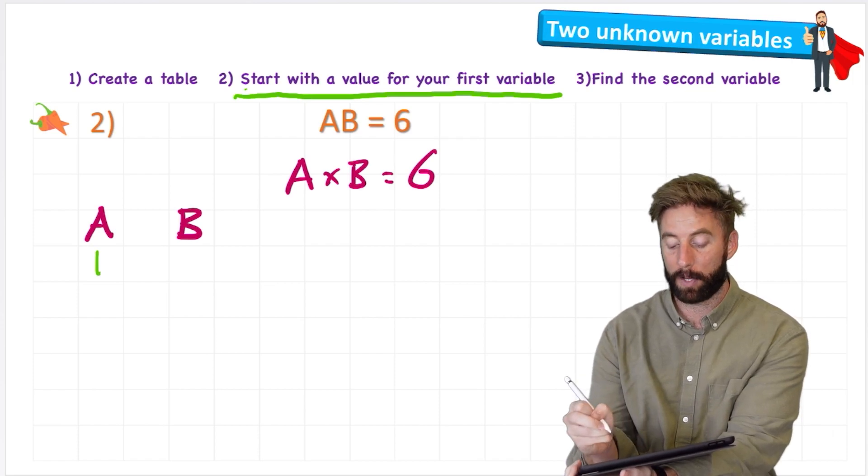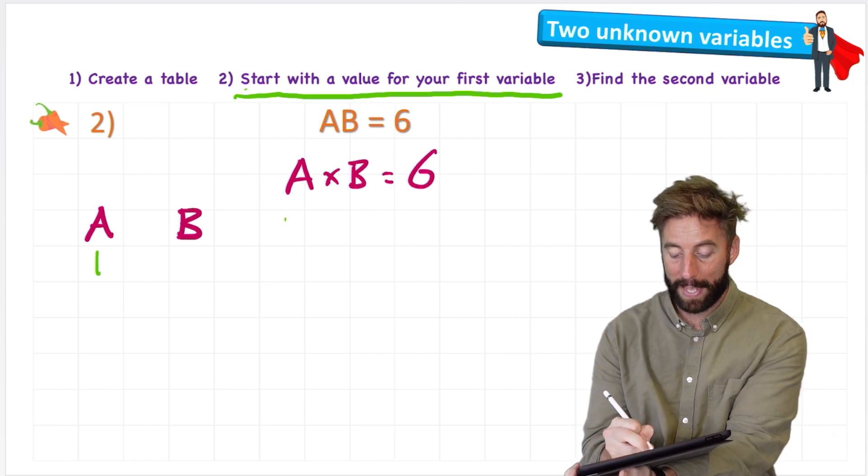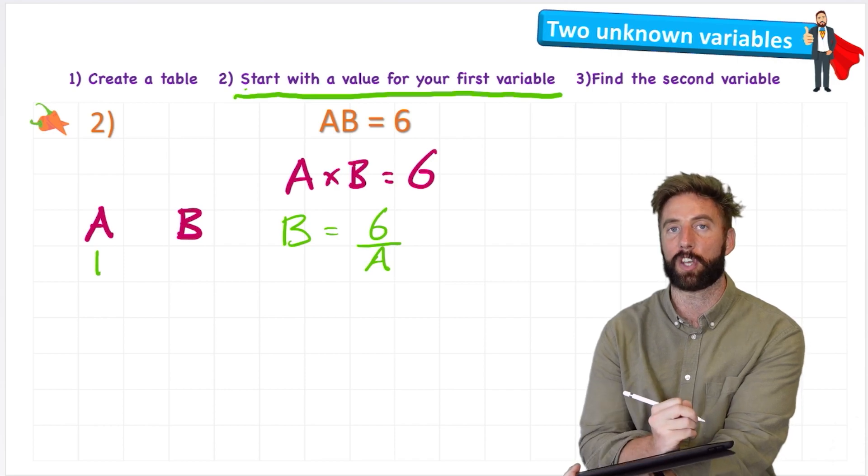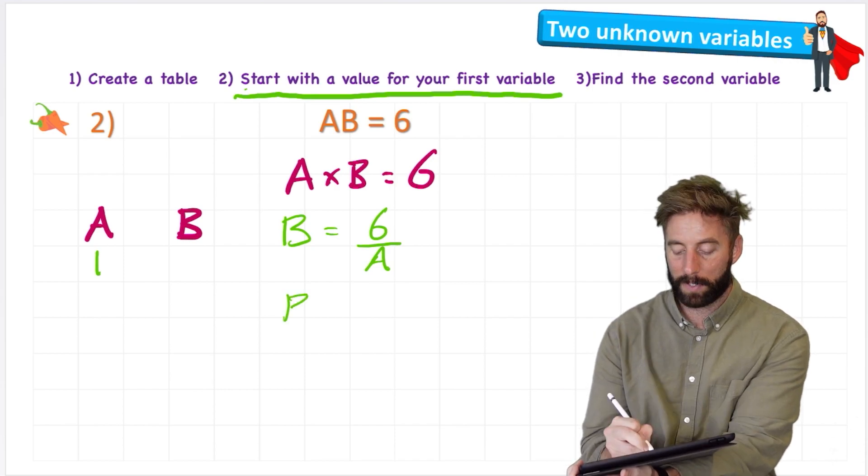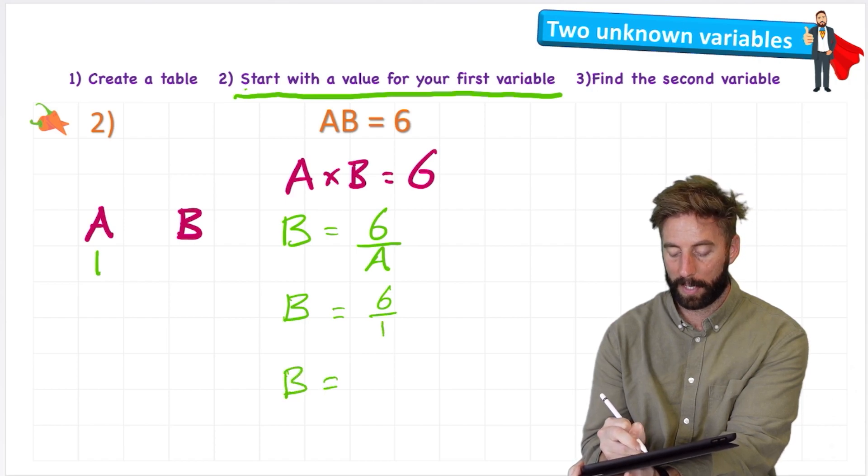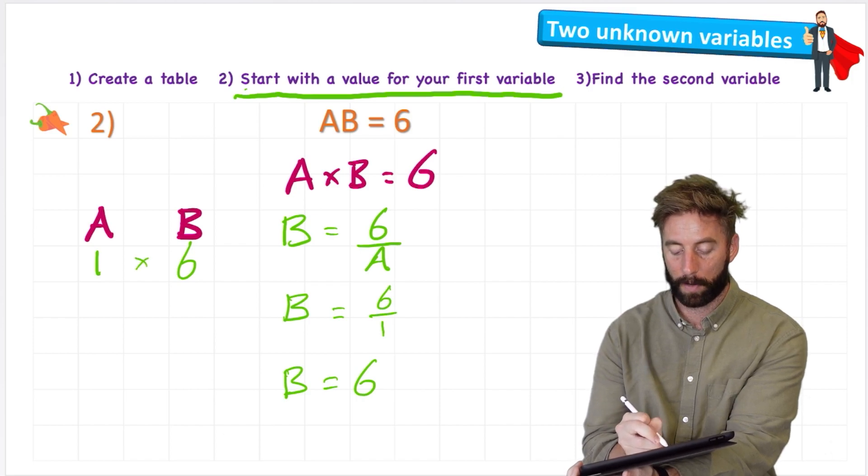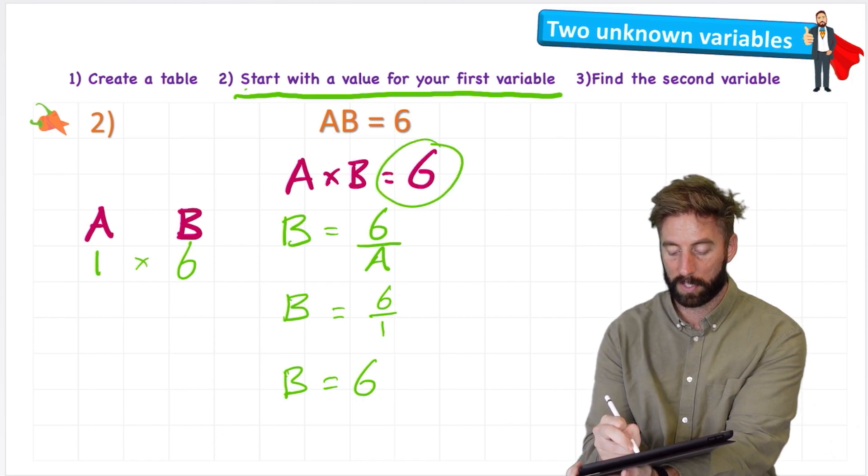And again we can use our inverse to help us here. So A × B = 6. So therefore B must equal 6 ÷ A, because division is the opposite of multiplication. 6 ÷ A would be 6 ÷ 1, and therefore B = 6. And that looks right, doesn't it, because 1 × 6 does equal 6.